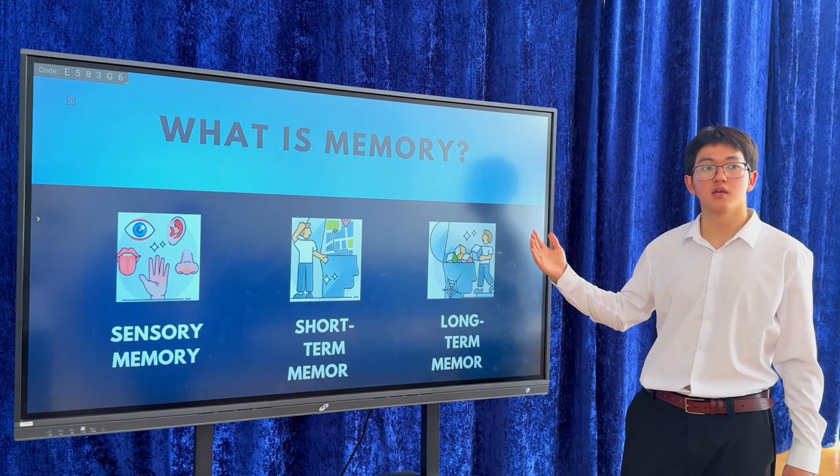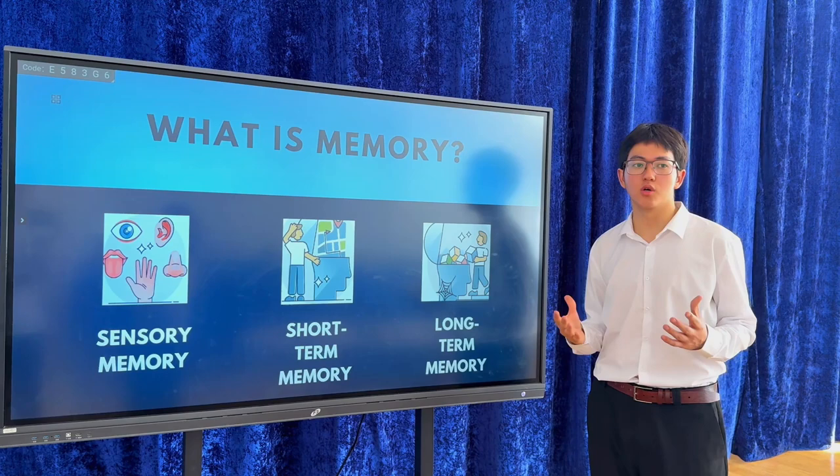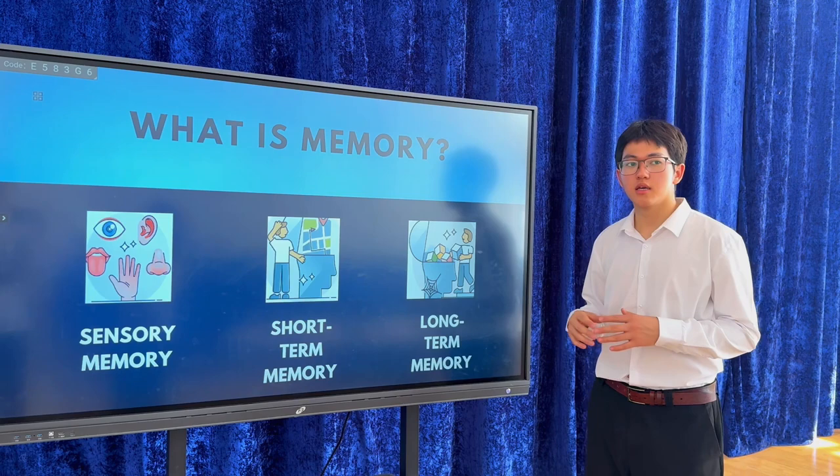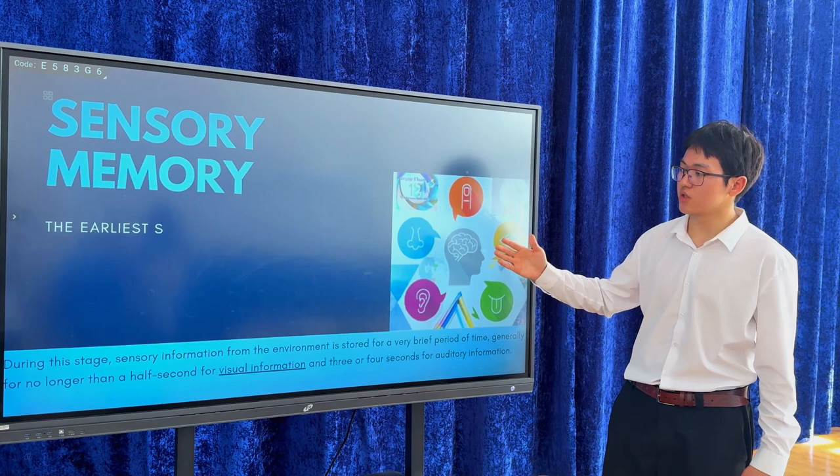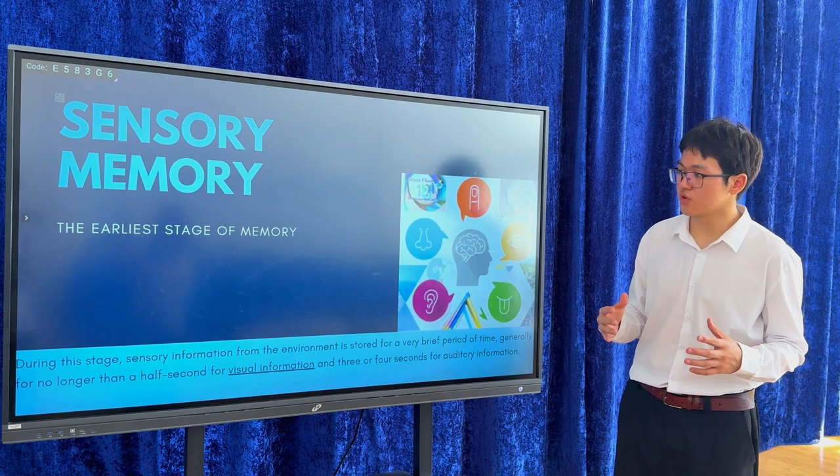What is memory? Memory is our brain's storage and recall system for information and experienced experiences. We have three types of memory: sensory memory, short-term memory, and long-term memory. Sensory memory is the earliest stage of memory, generally lasting no longer than half a second for visual information.